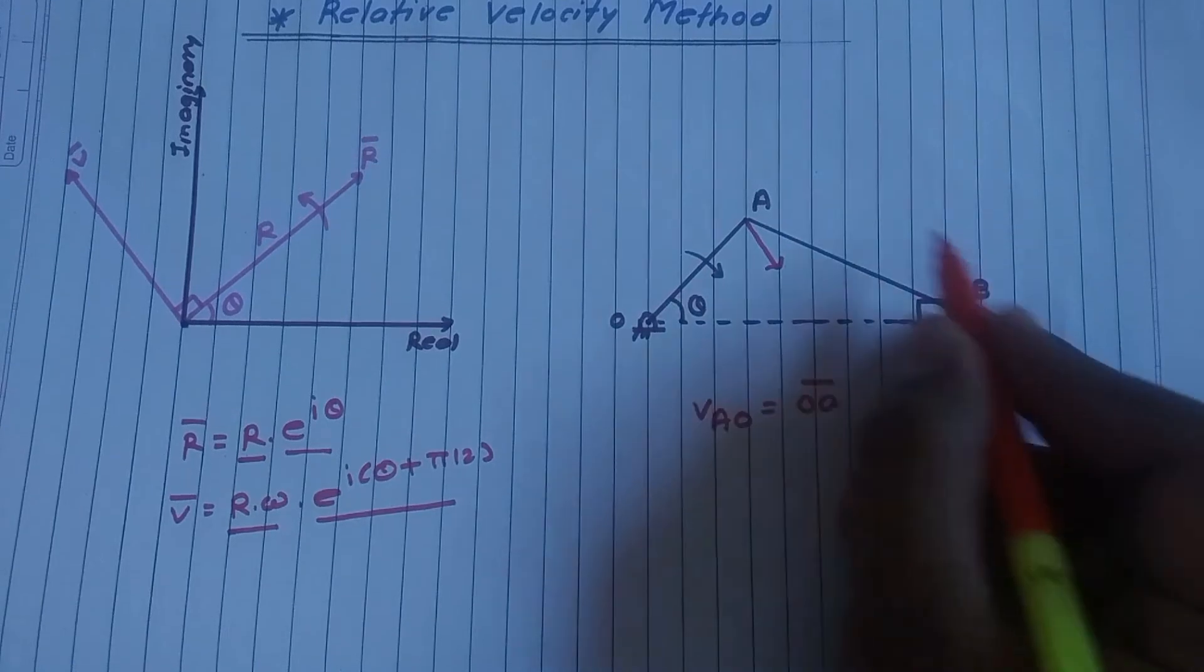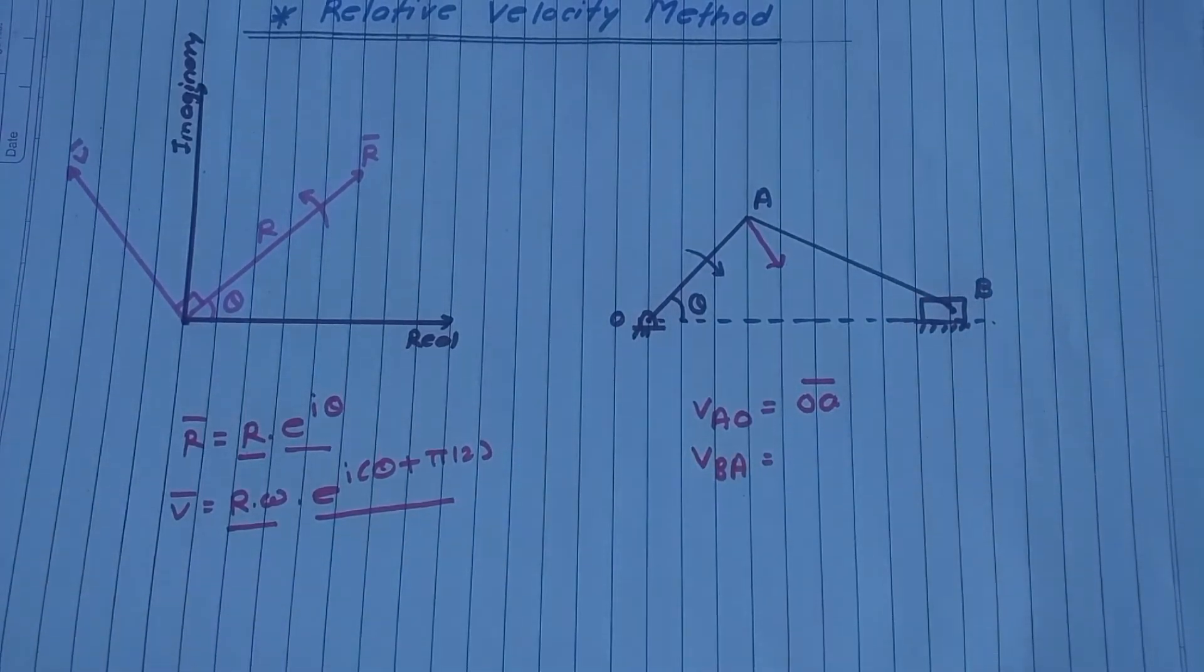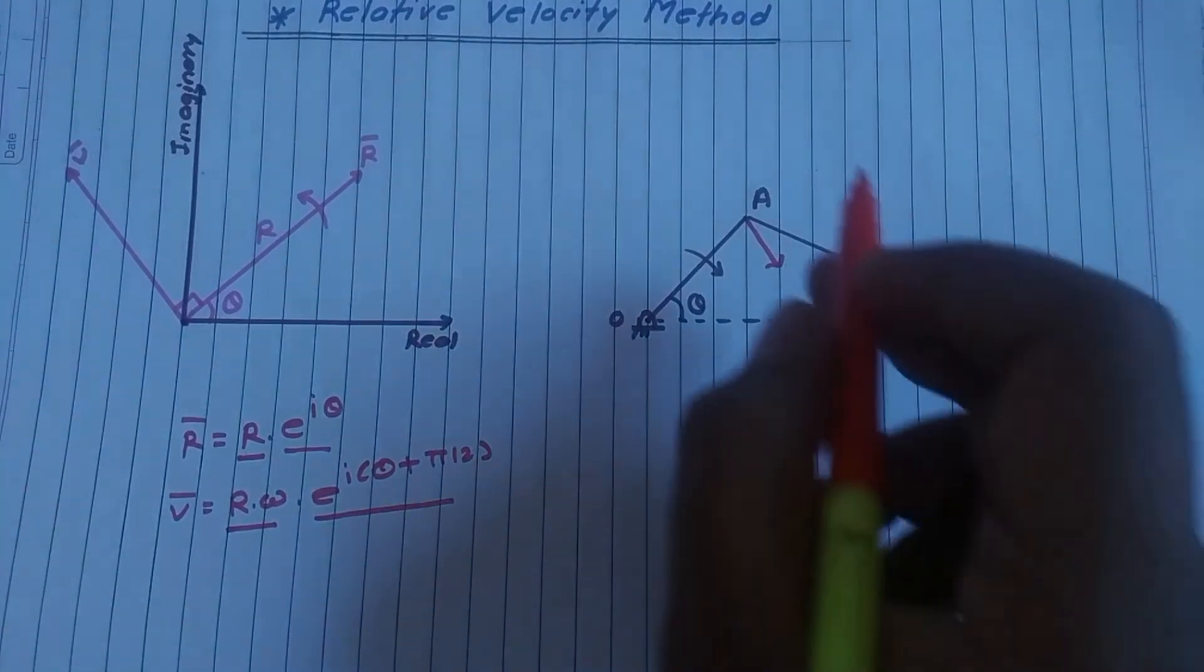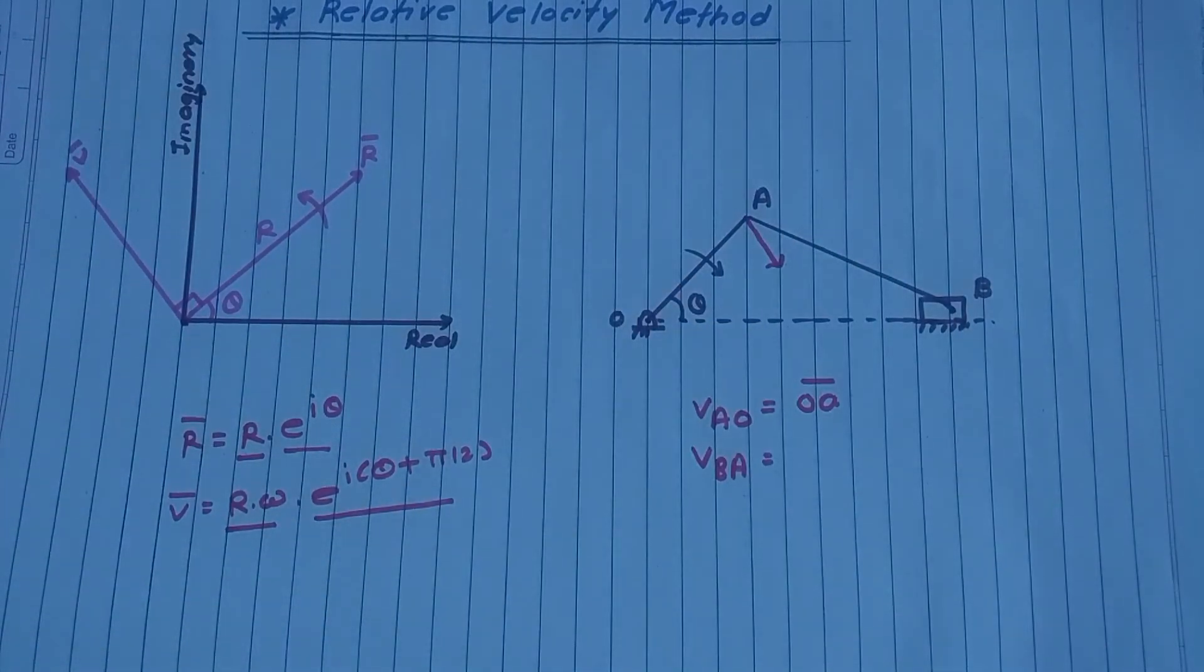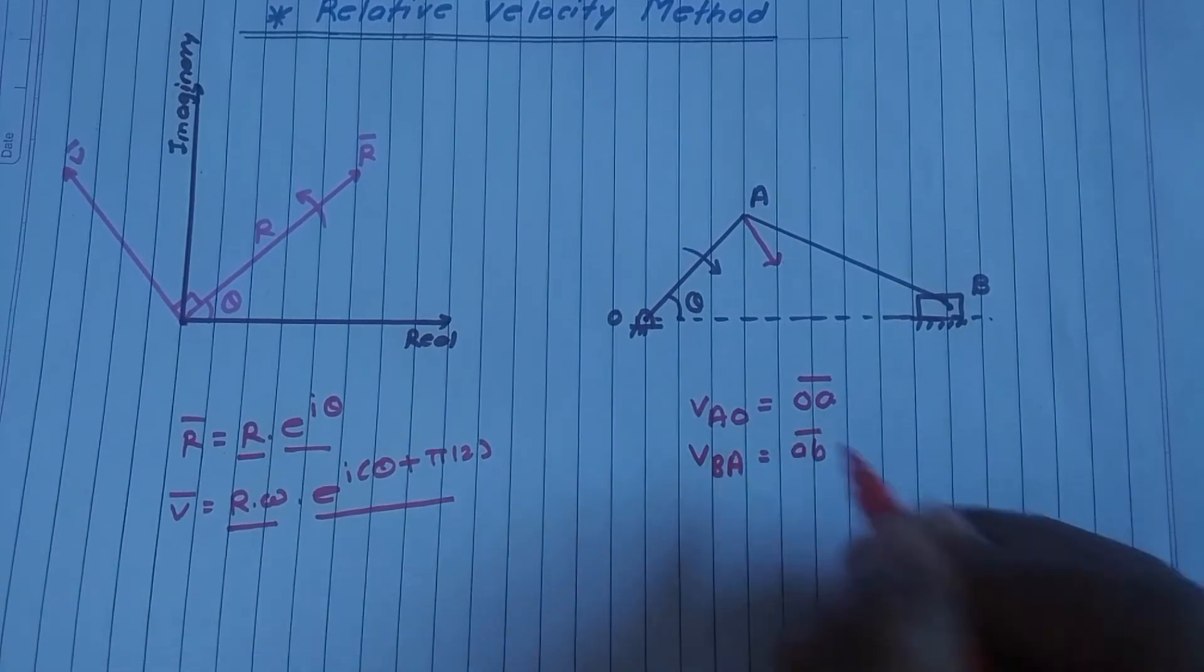So velocity of B with respect to A. Keep in mind we are always considering velocity of succeeding point with respect to preceding point, starting from fixed point. Velocity of B with respect to A is AB bar.